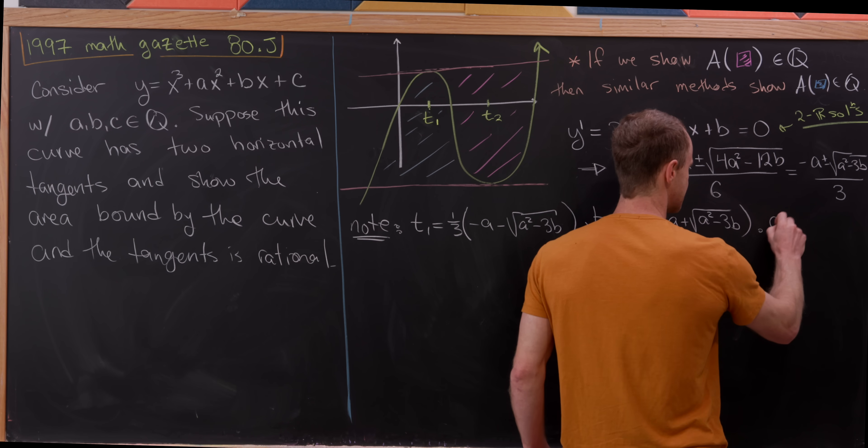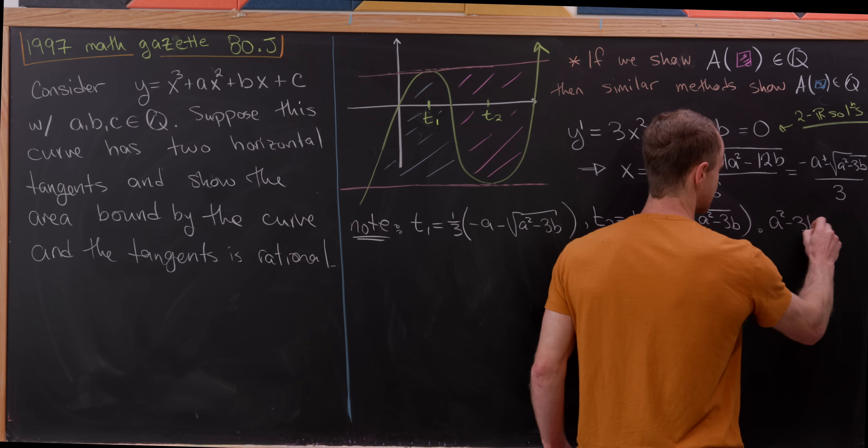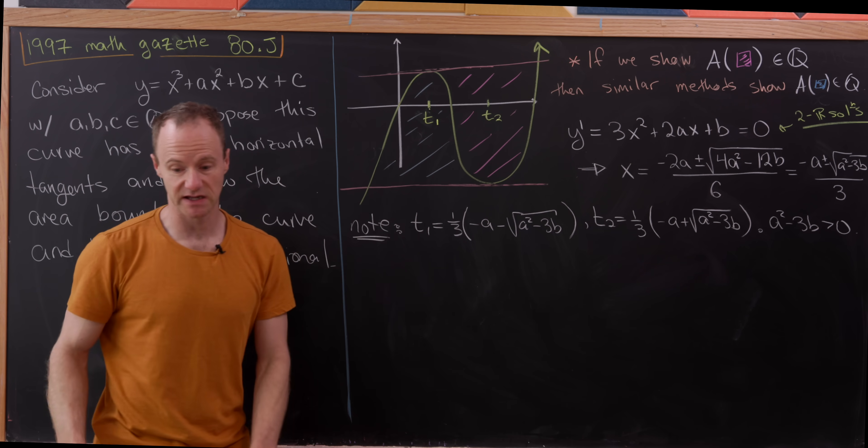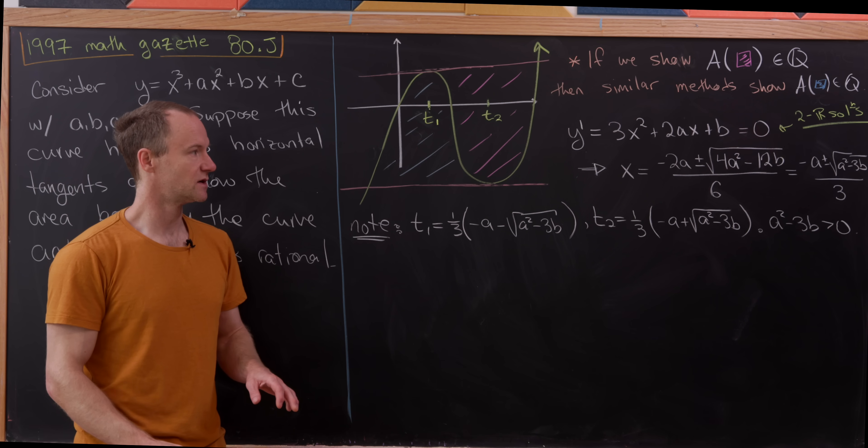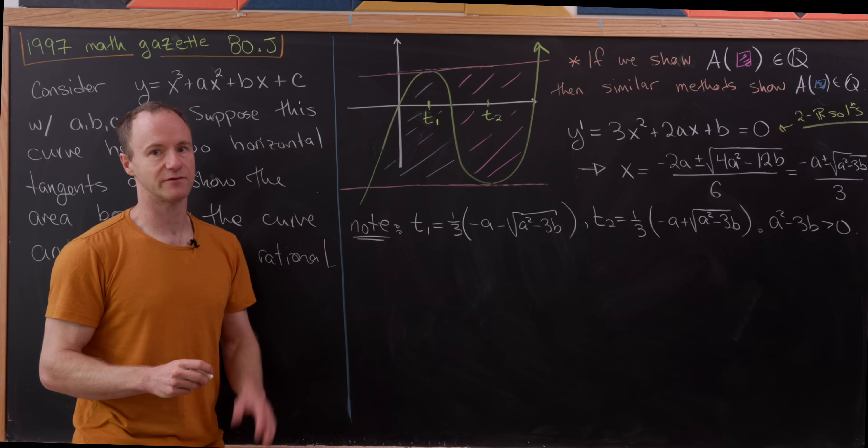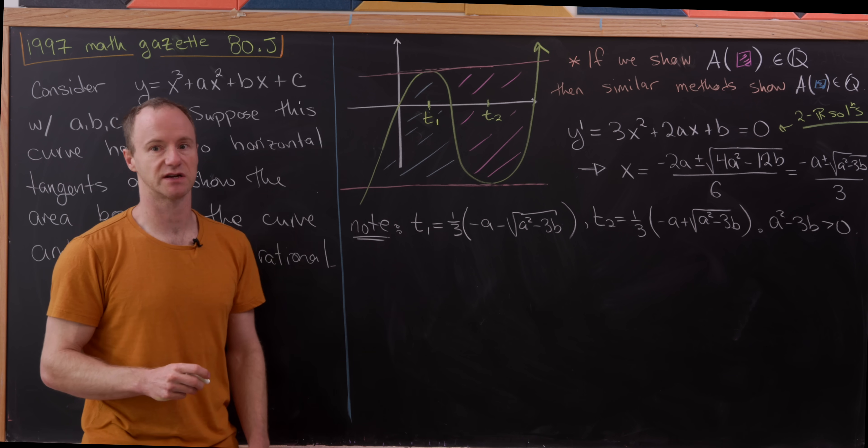Another thing is that we know that a squared minus 3b is strictly bigger than zero, because that's the condition that would give us two real roots to this derivative. In other words, to have two distinct horizontal tangent lines.